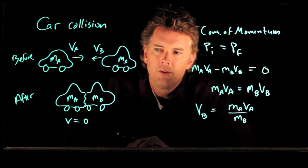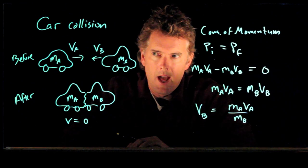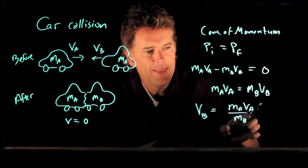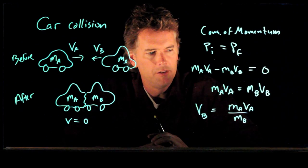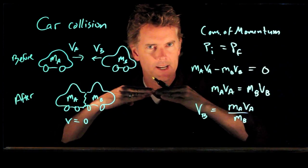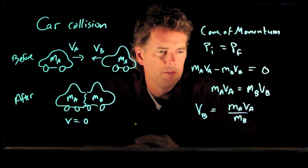So, if those masses were exactly equal, then car A moving at V sub A, car B would be moving at the same speed V sub A. And that should make sense to you, right? If two cars that are identical come together at the same speed, final velocity is, of course, zero.